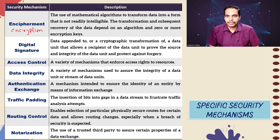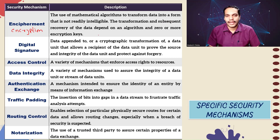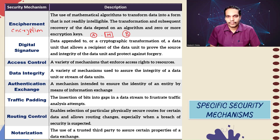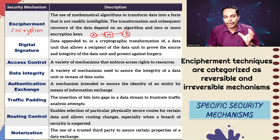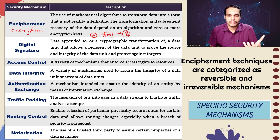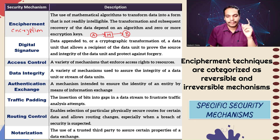Encipherment is the use of mathematical algorithms to transform data into a form that is not readily intelligible. The transformation and subsequent recovery of the data depend on an algorithm and zero or more encryption keys. Simply put, if you want to send a message M from sender A to receiver B, rather than sending it in plain text so that everybody can see it, you employ some kind of mathematical algorithm on the message and convert it into a form which is unintelligible — an opponent cannot read this message. That is what we call encipherment.